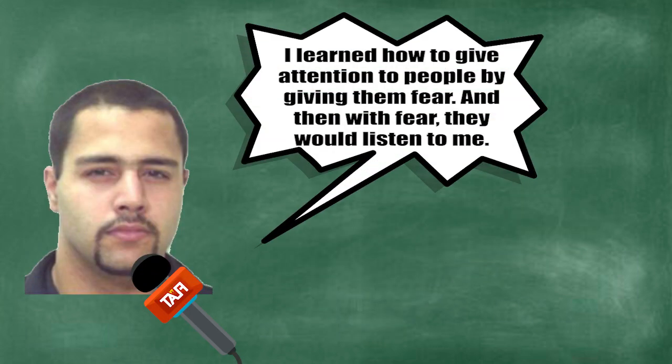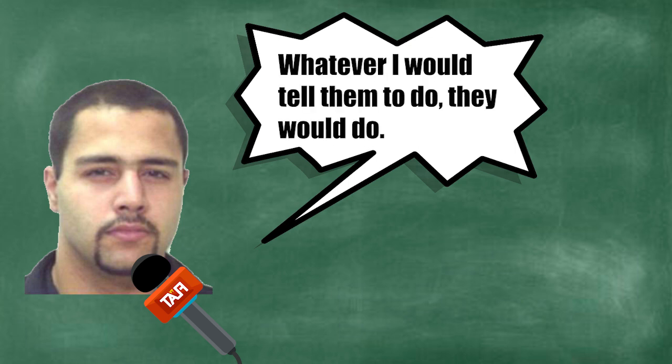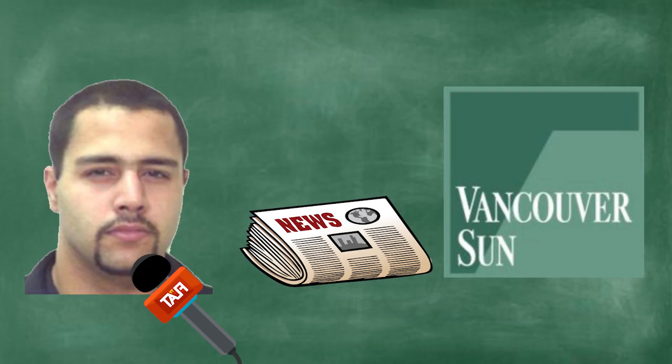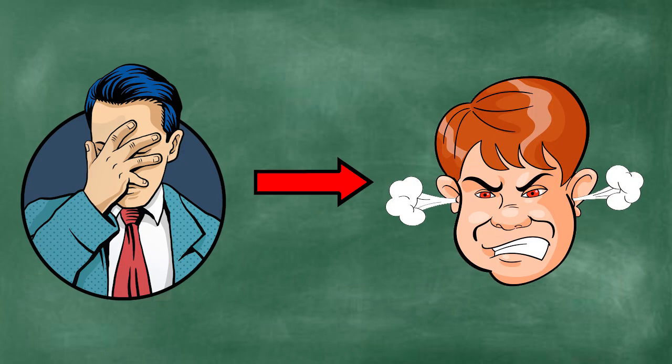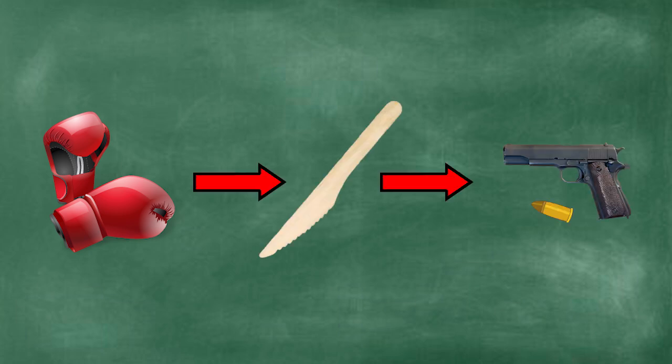I learned how to give attention to people by giving them fear. And then with fear, they would listen to me. Whatever I would tell them to do, they would do, Bal told the Vancouver Sun. With his newfound realization, Bal grew even wilder. It started with fistfights, then knives, and it wasn't long before he found himself with a gun in hand.